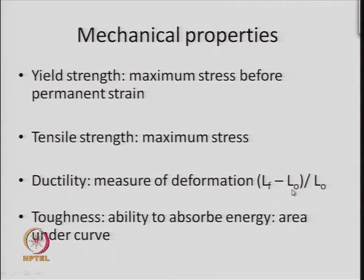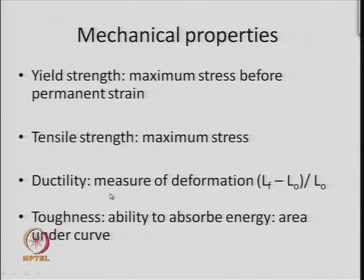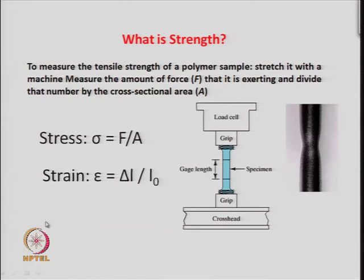If you have an initial length L₀ and a final length Lf on the application of a deforming force, the difference between the two lengths divided by the original length gives you ductility — how much the material has deformed under stress. Toughness is how much energy a material can absorb. To get these numbers quantitatively you measure stress and strain.